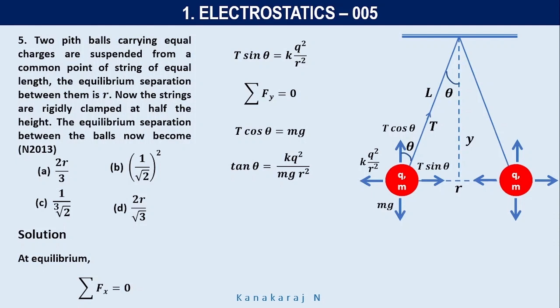In this particular term, few terms are constant. What are the terms constant? K is constant, M is constant, G is constant, Q square is constant. Let us frame a proportionality equation between tan theta and R square. So R square proportional to 1 by tan theta. 1 by tan theta is nothing but cot theta. So R square proportional to cot theta.